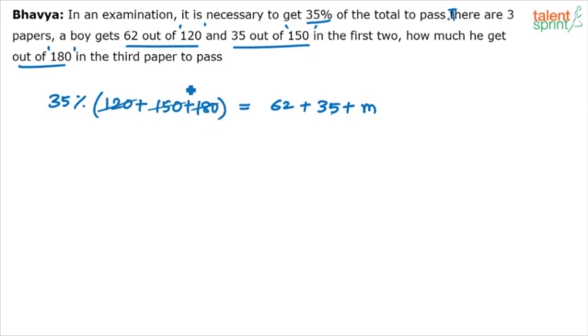35% of 450. What is 35% of 450? 35% of 450. 10% is 45. 30% will be 135. And 5% will be 22.5. So, 135 plus 22.5 is 157.5. You are getting me?